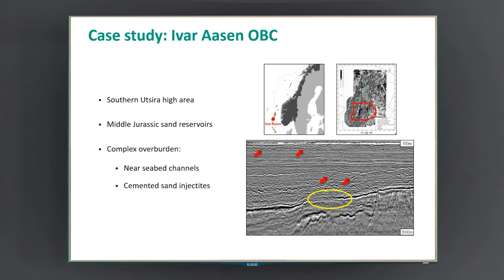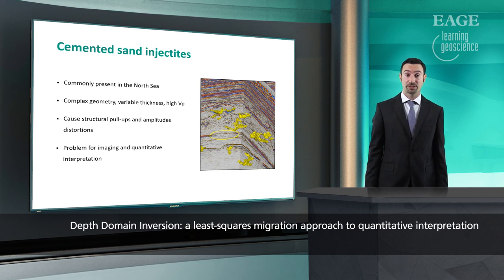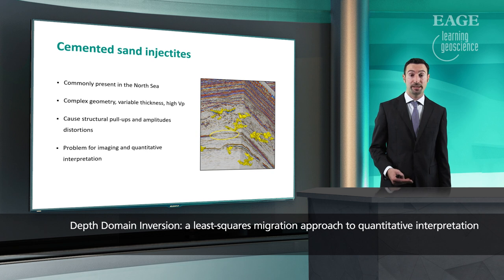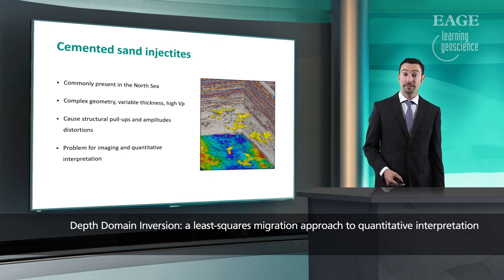I'm now going to demonstrate the application of depth-domain inversion to a CBET dataset from the Norwegian continental shelf. In this situation, the reservoir was represented by middle Jurassic sandstones, and the complexity in the overburden was represented by near-seabed channels, as well as cemented sand injectites. Particularly, cemented sand injectites pose a real challenge for seismic imaging. They are commonly present in the North Sea, and they show a very complex geometry with variable thickness and very high velocity in comparison to the sediments around. Such cemented sand injectites cause structural pull-ups and amplitude distortions underneath, and this is a problem both for imaging as well as for reservoir characterization.